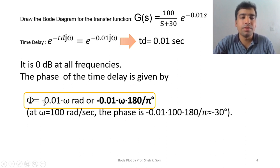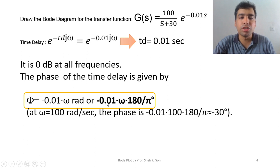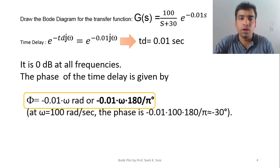The phase angle equation for the delay term is: angle = -td * ω in radians. Converting to degrees: angle = -td * ω * (180/π) degrees, where td = 0.01. For example, if ω = 100 radians per second, I place that value in the equation and calculate the resulting angle in degrees. This can be calculated for different frequencies. This is the effect of the delay term you need to understand.